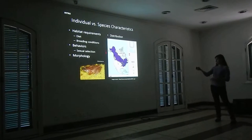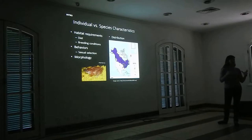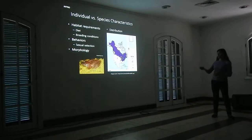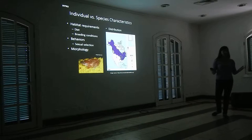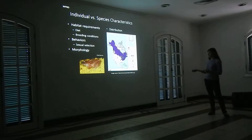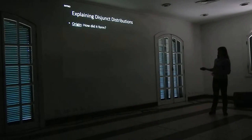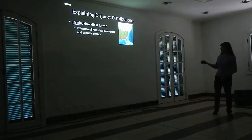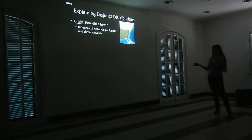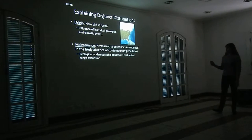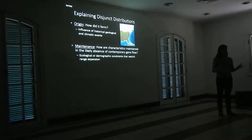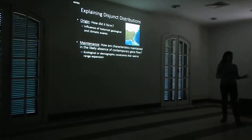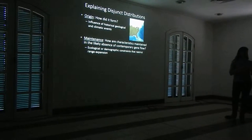Distributions, like this wood frog distribution, can come in different flavors — the area they cover can be vastly different, or the shape they might have. In this case, a more continuous-type distribution versus something that's more isolated or fragmented, like a disjunct distribution. These disjunct distributions are really interesting to consider, because to explain them we need to look at both the historical, geologic, or climatic factors — like glaciers — and also how individual-level characteristics are maintained in the likely absence of contemporary gene flow, with ecological and demographic constraints limiting expansion to these isolated fragments.